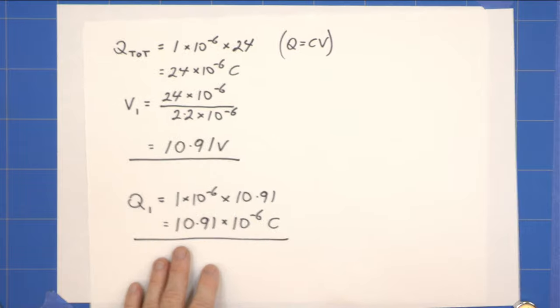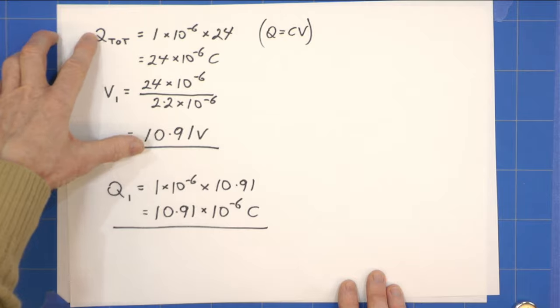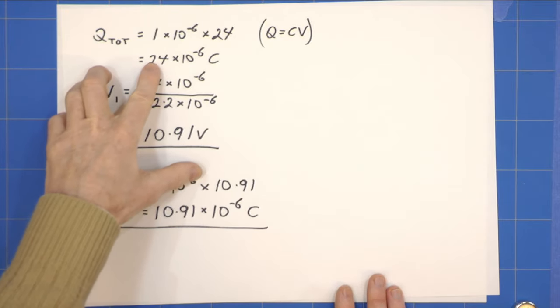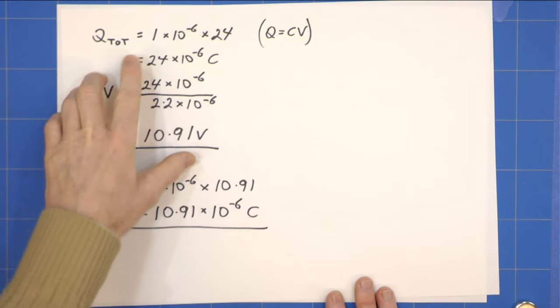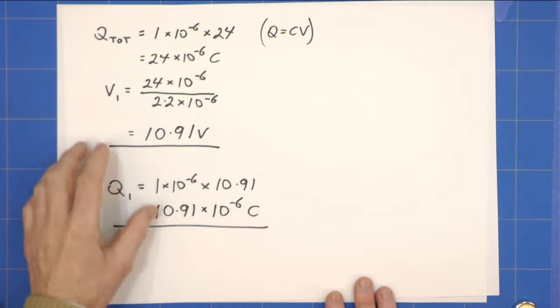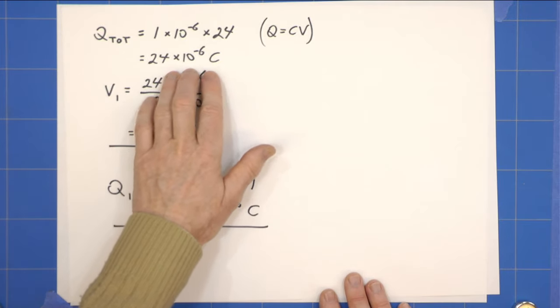So we know straight away because we've got a fixed charge and we knew what the charge was initially, it was 24 volts times the capacitance which was 1 microfarad, so we've got 24 times 10 to the minus 6 coulombs.